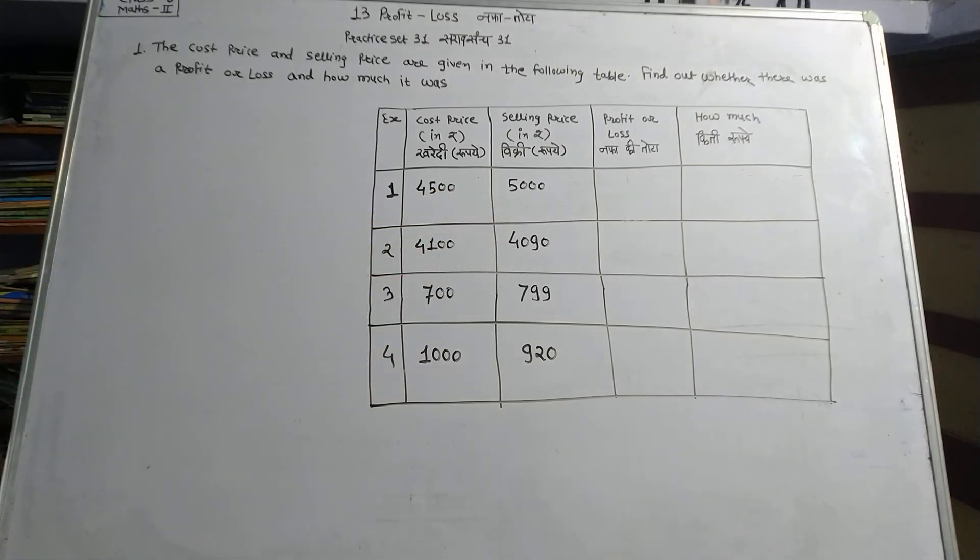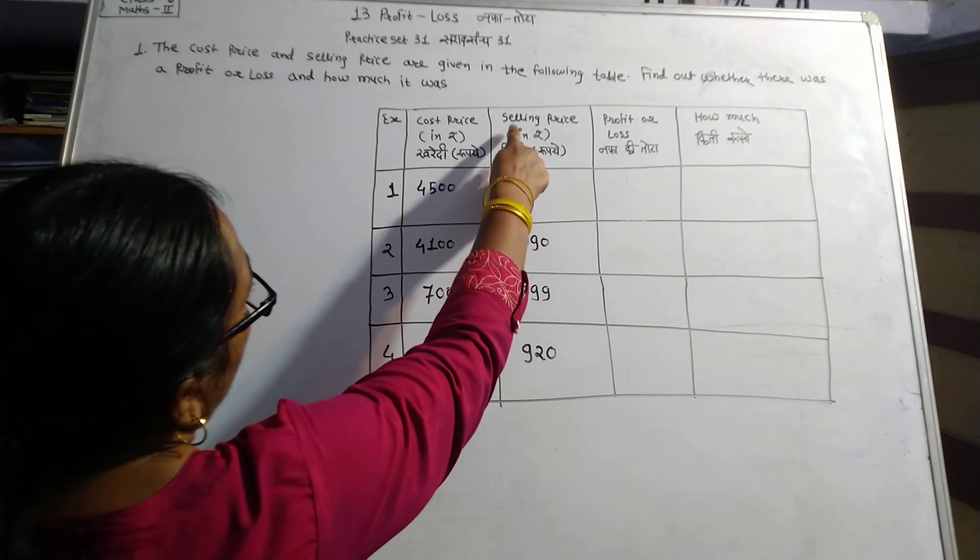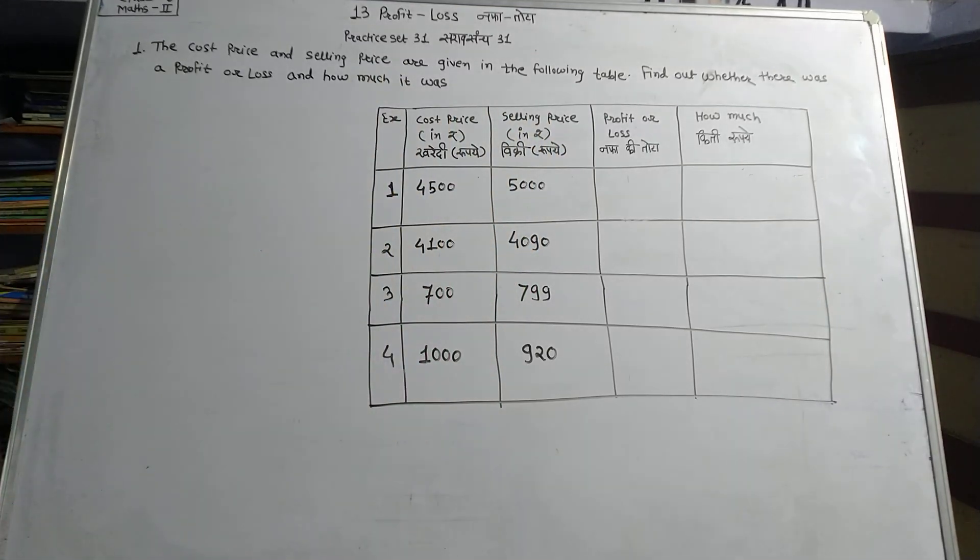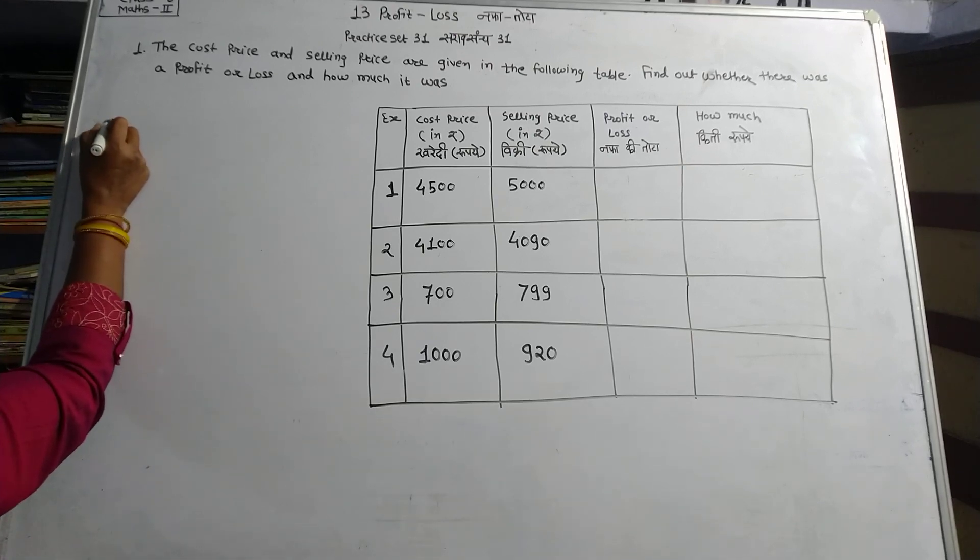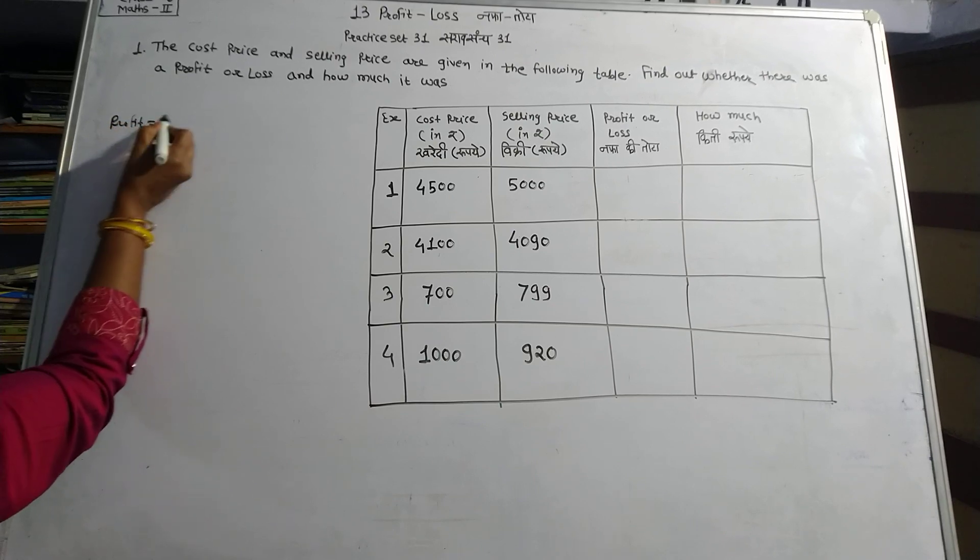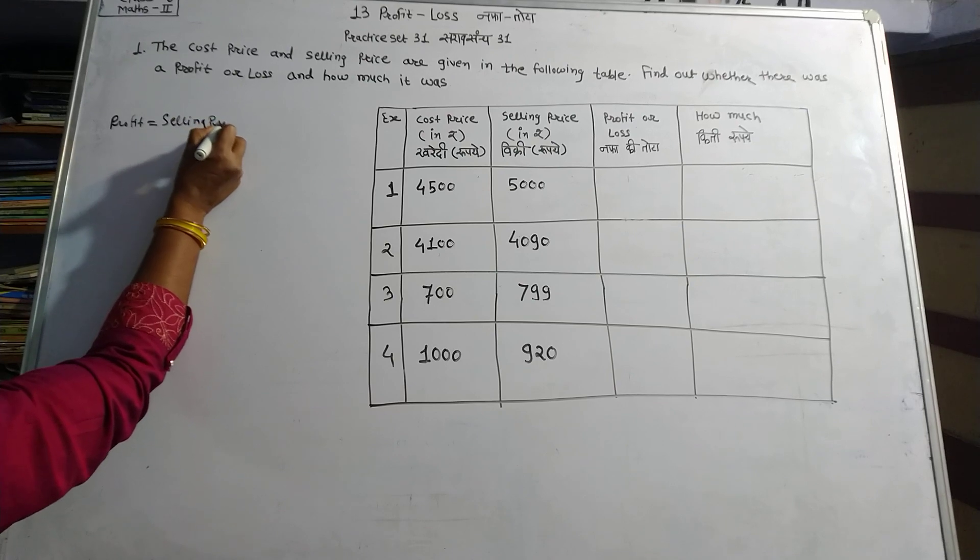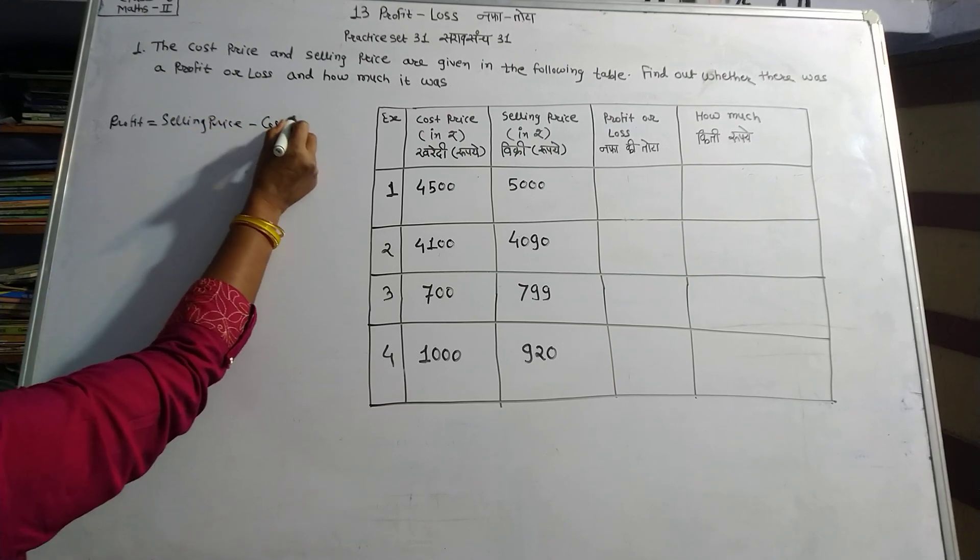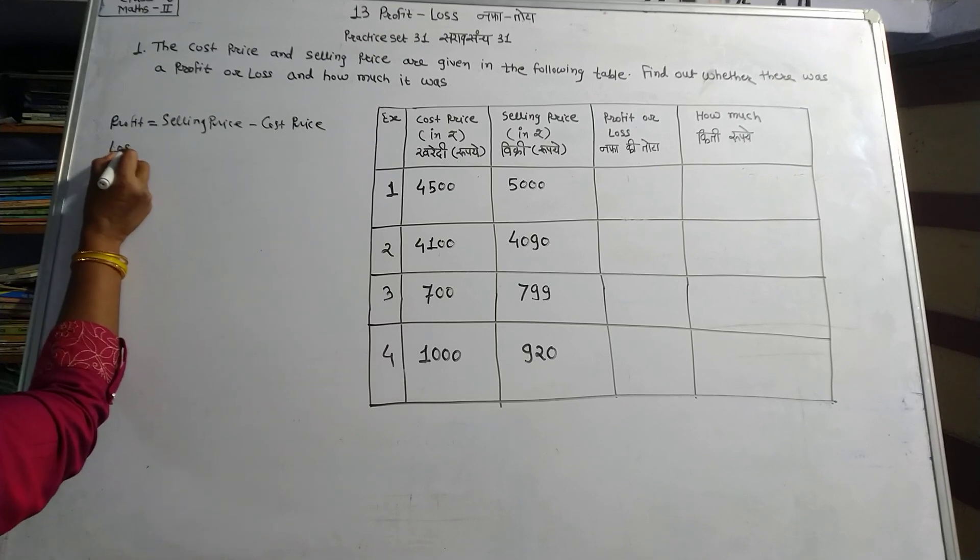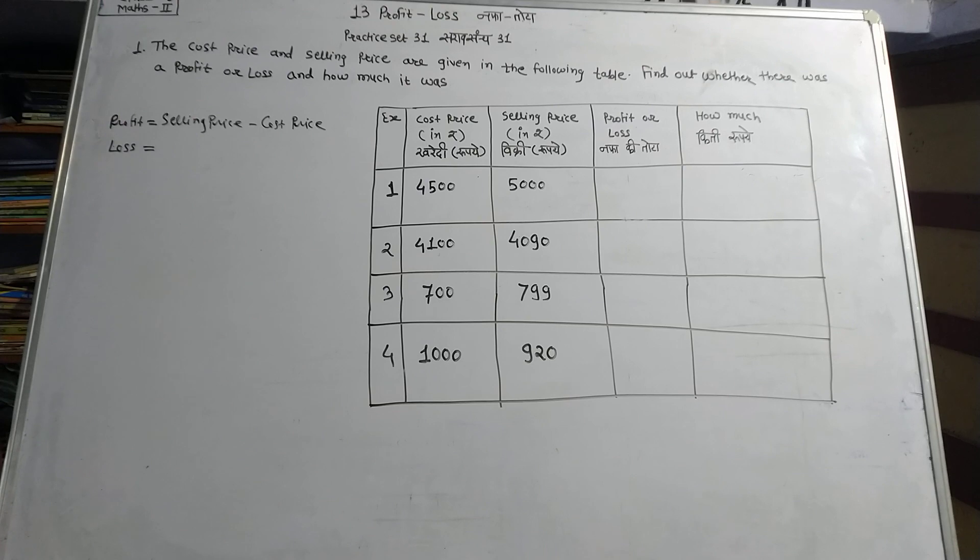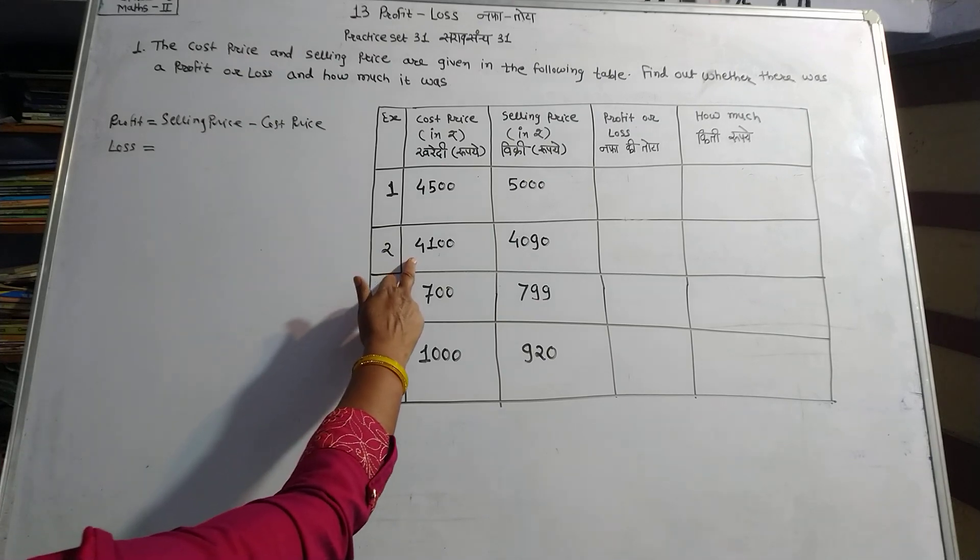Profit equals selling price minus cost price. Loss occurs when the selling price is less than the cost price.